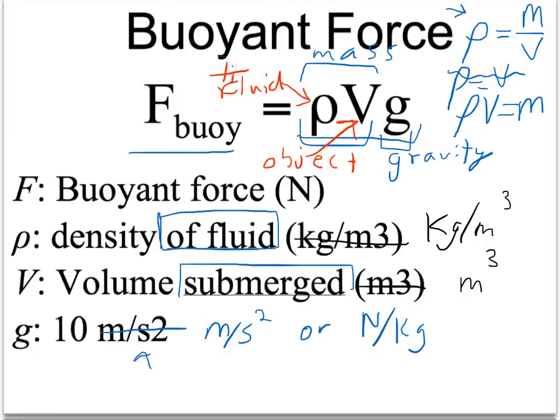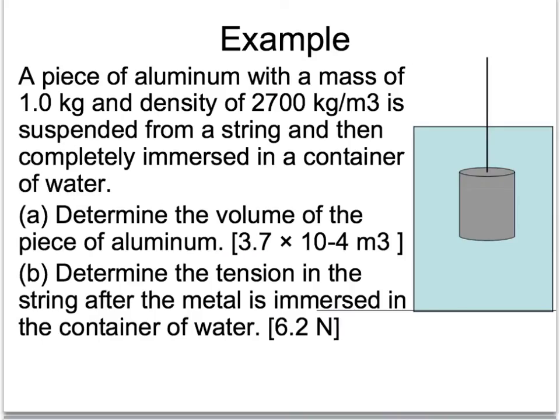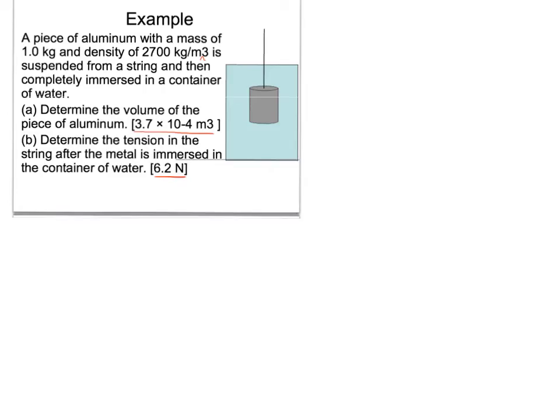And I've got a couple examples to help us out with this. First example: a piece of aluminum with mass of one kilogram and density of 2700 kilograms per meter cubed is suspended from a string and then completely immersed in a container of water. Determine the volume of the piece of aluminum. And I've included the answers on here just to make sure we get to the right place.